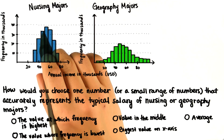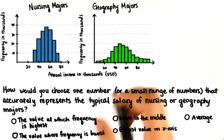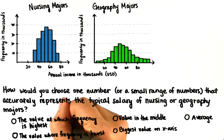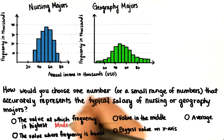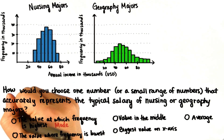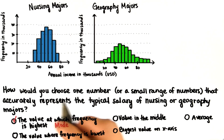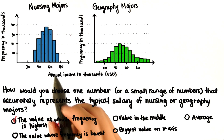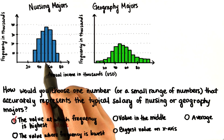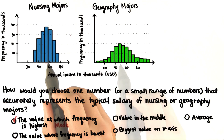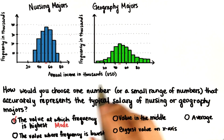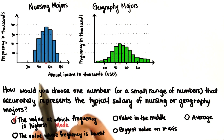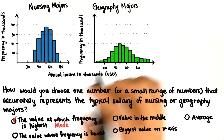The value at which the frequency is highest is called the mode, and this certainly works in describing the distribution. In the case of a histogram, the mode would be this bin right here, and this bin right here. The most common value is the mode.